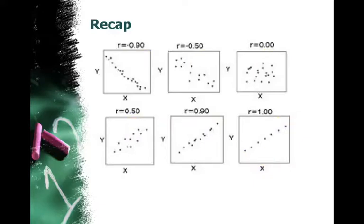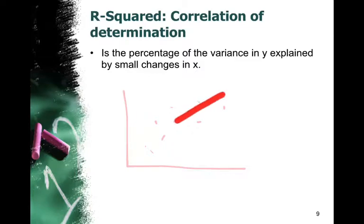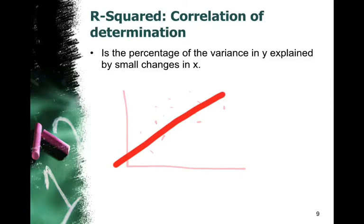The last thing we want to look at is what is r squared. R squared is the coefficient of determination — it is the percentage of the variance in y explained by any small changes in x. When you look at a scatterplot with a straight line drawn through it, r squared tells you how much these points vary off from the straight line — how much of the variation between these points from one another and from the straight line is accounted for by your line.